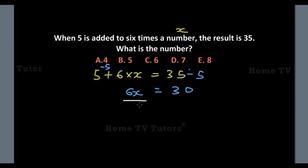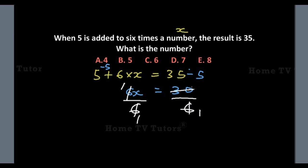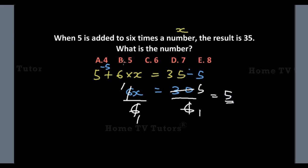We divide both sides by 6. On the left-hand side, 6 divides 6X to give X. On the right-hand side, 6 divided into 30 gives us 5. So the unknown number X is equal to 5. The answer option B is the right answer.